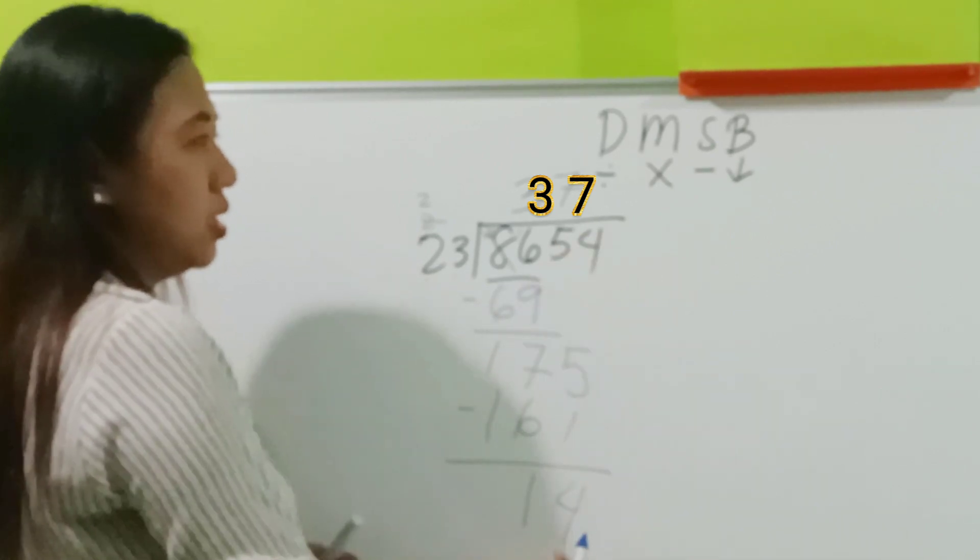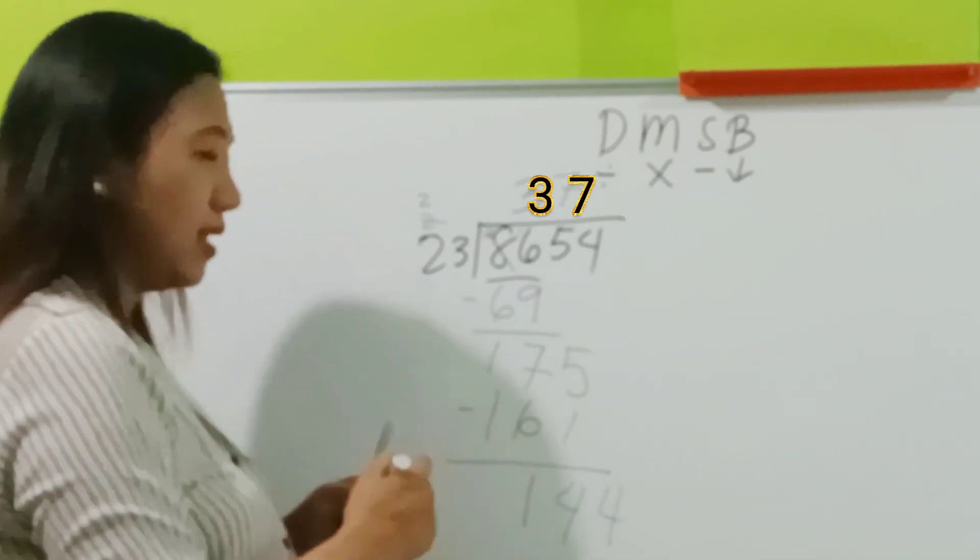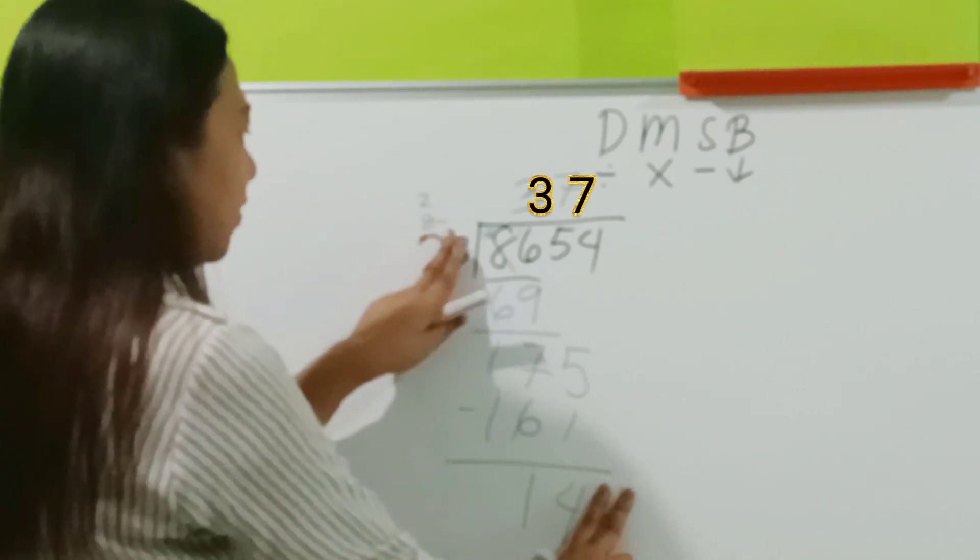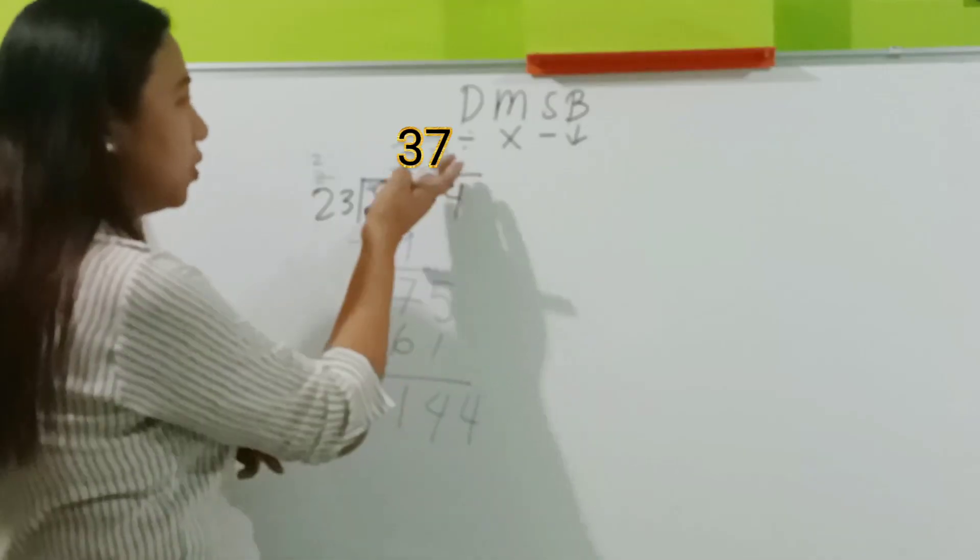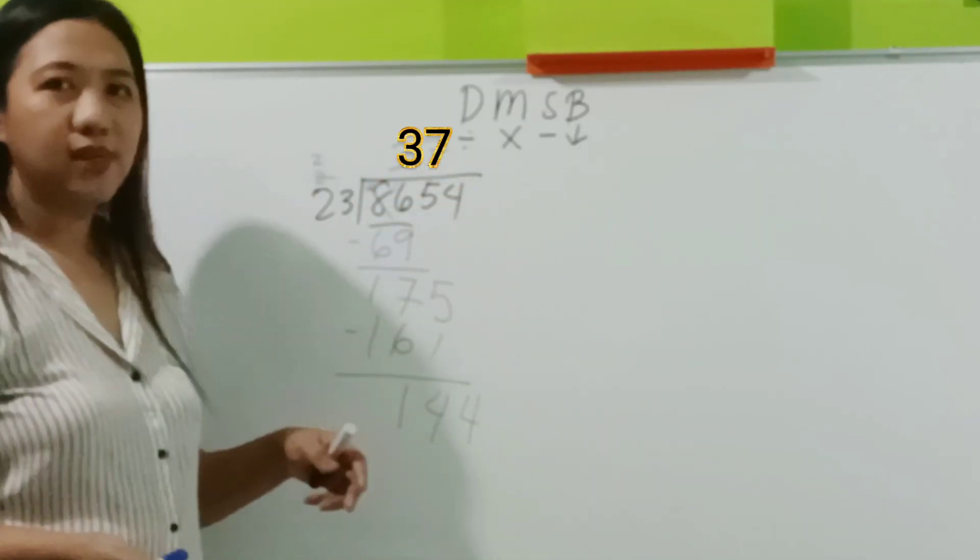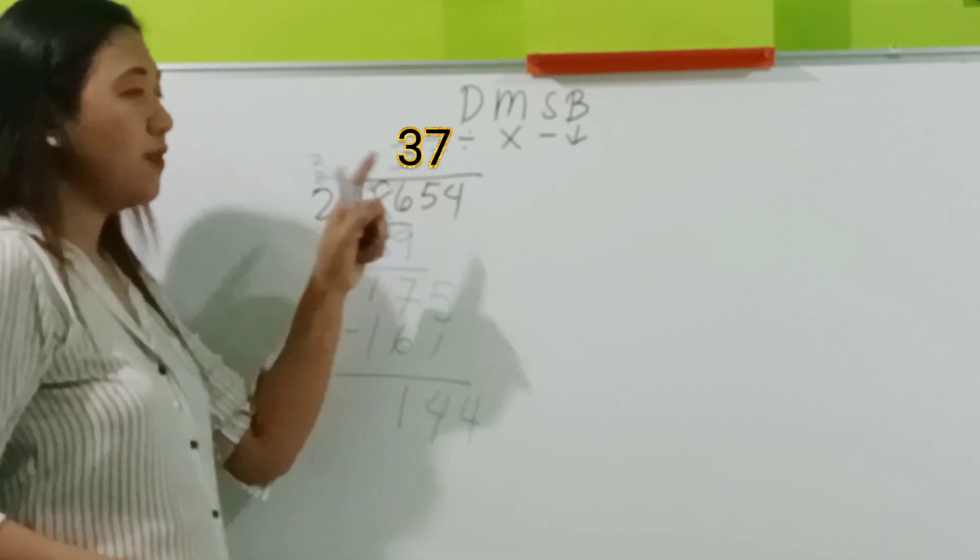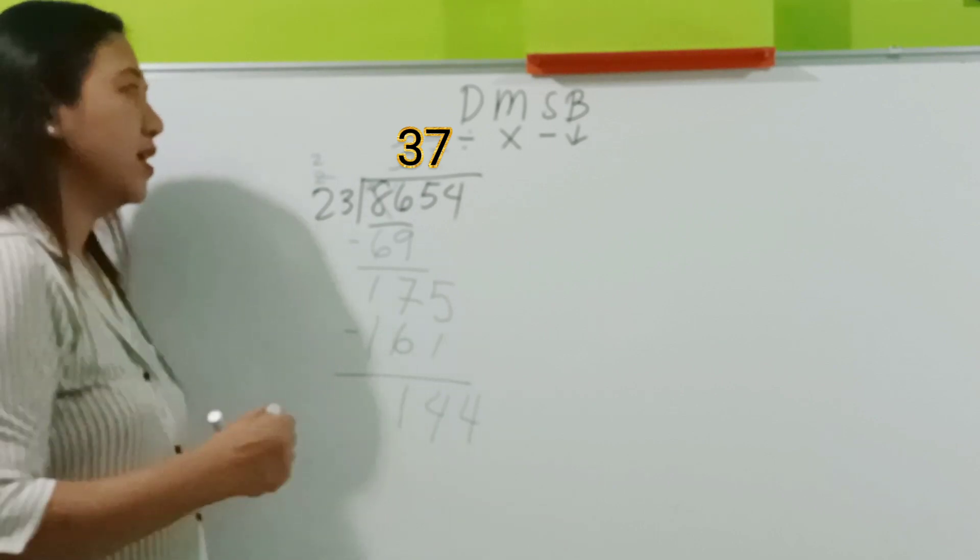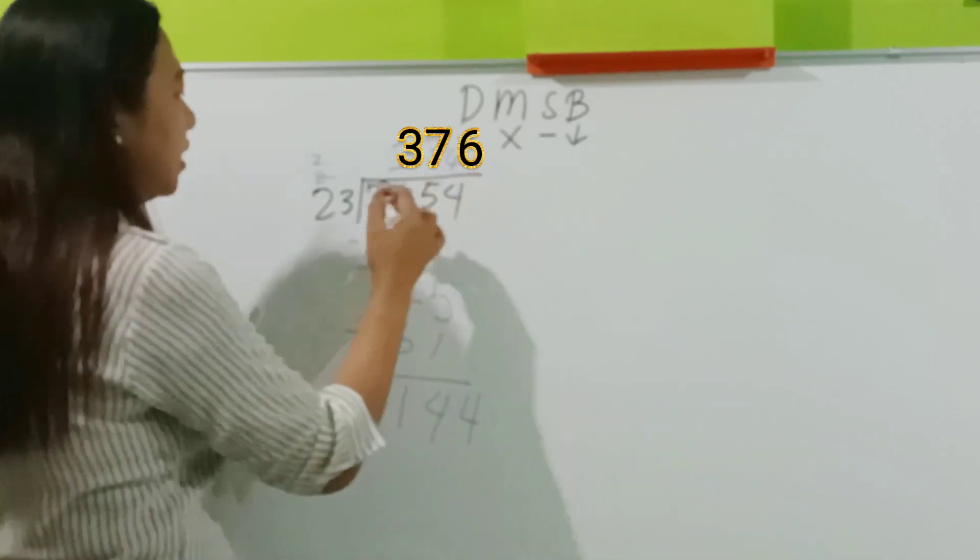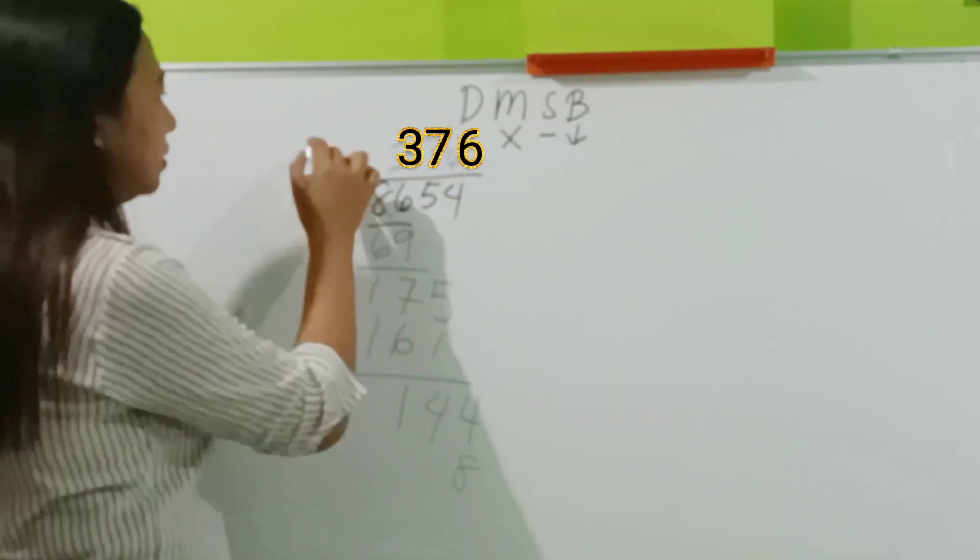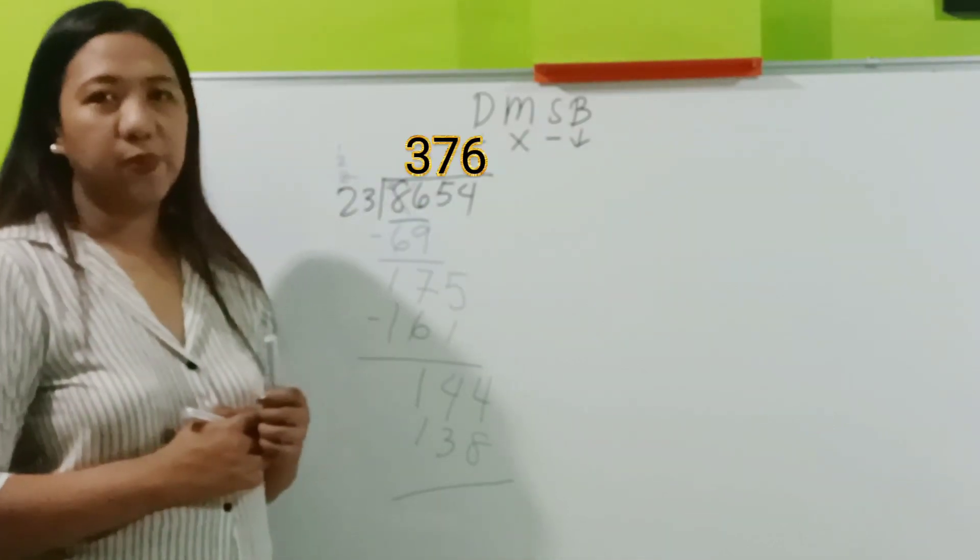And, after subtraction, we have to bring down. Bring down 4. Again, cover. Cover this. Cover this. 14 divided by 2 is 7. But, you can see that 7 is 161, right? And 161 is bigger than 144. So, we have to subtract 1 from the number. So, let's try 6. 6 times 3 is 18. 6 times 2 is 12, plus 1 is 13.